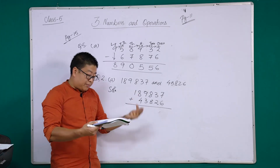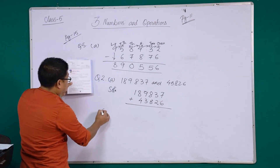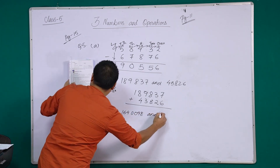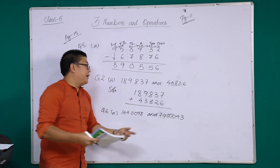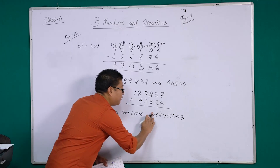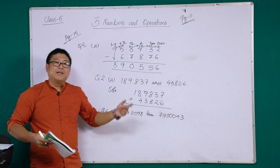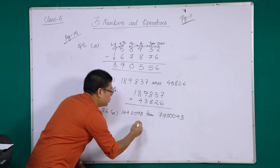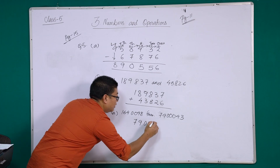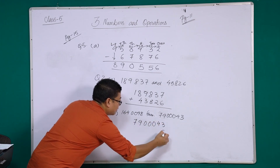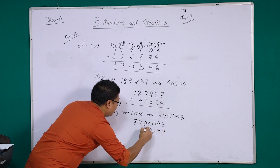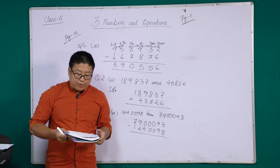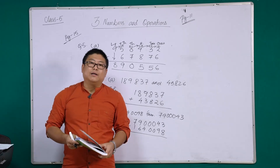Similarly, for subtraction, question number six says: arrange the following in columns and subtract. The trick here is they use the word 'from', meaning they give the smaller number first and you subtract from the bigger number. So write the second number first and the first number second, then simply subtract. This is all about addition and subtraction. I hope you have all understood — kindly keep practicing and see you in the next class. Thank you.